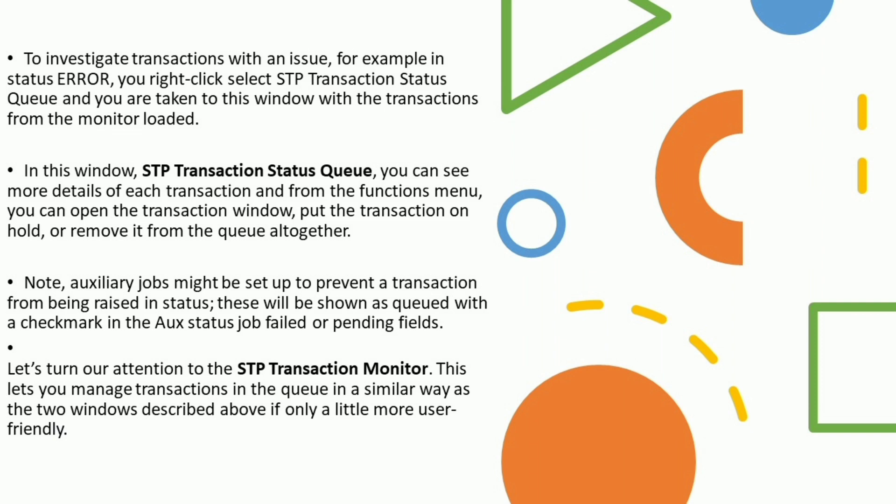Note: auxiliary jobs might be set up to prevent a transaction from being raised in status. These will be shown as queued with a check mark in the Aux Status Job Failed or Pending fields.